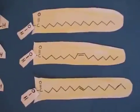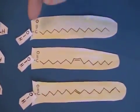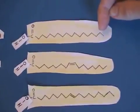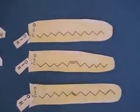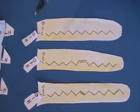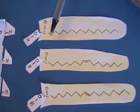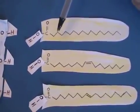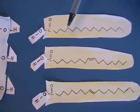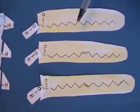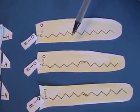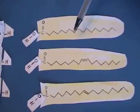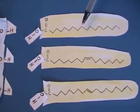What I mean by fatty acid is that you've got this long zigzag chain of carbons and hydrogens. This zigzag is simply a line angle formula — each vertex here represents a carbon atom. Every carbon needs four bonds, so it's just CH₂, CH₂, CH₂ all along the chain.